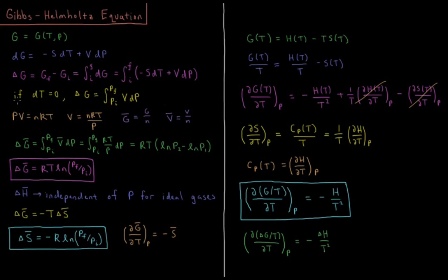If we have the temperature being constant, then the change in Gibbs energy that occurs is entirely due to the change in pressure. So delta G equals the integral from the initial pressure to the final pressure of the volume integrated with respect to pressure.